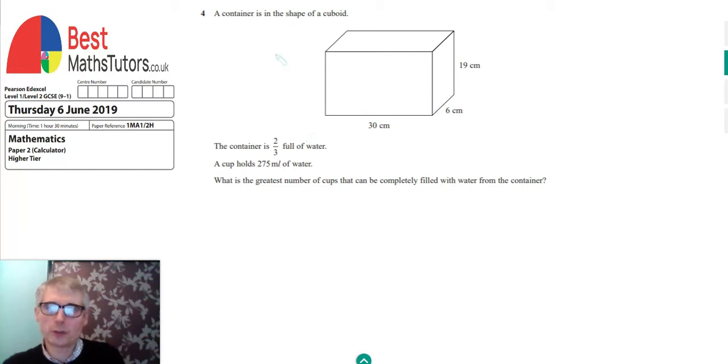This is a question in which we're told a container is in the shape of a cuboid with sides of 36 and 19 centimetres. We're told that it's two-thirds full of water. A cup holds 275 millilitres of water, and we're asked to find the greatest number of cups that could be completely filled from the water in the container.